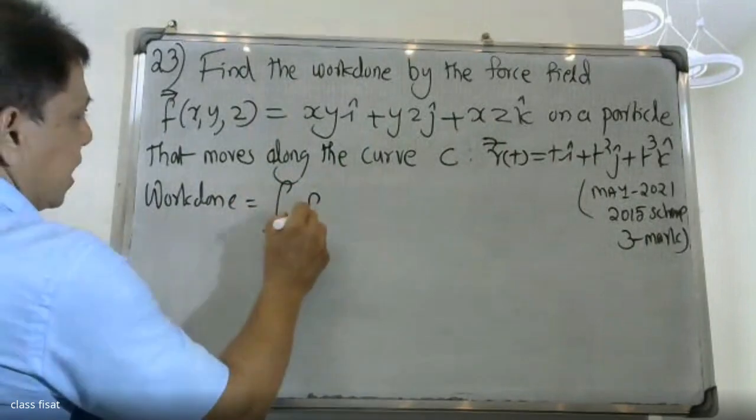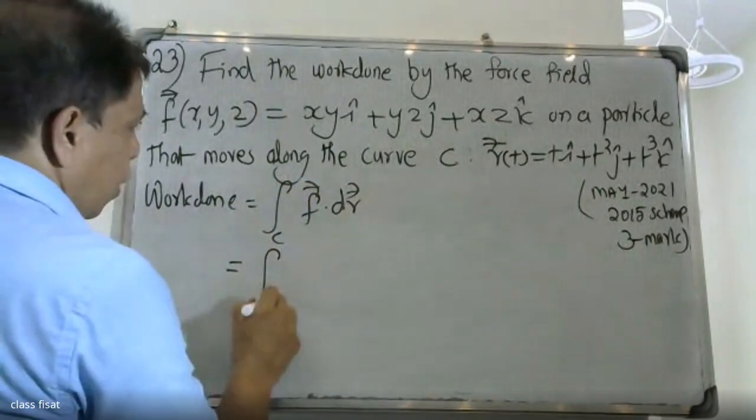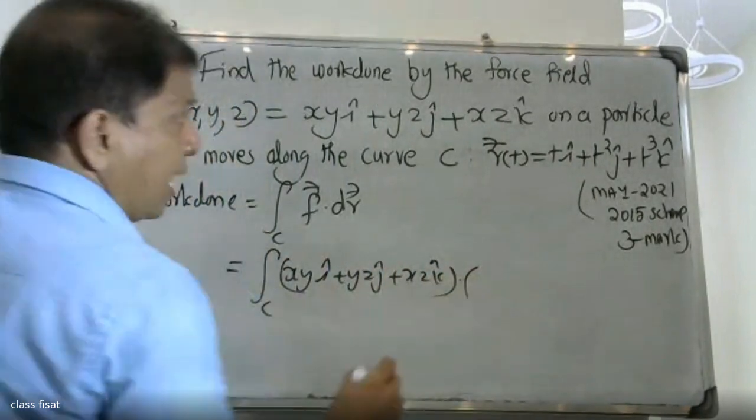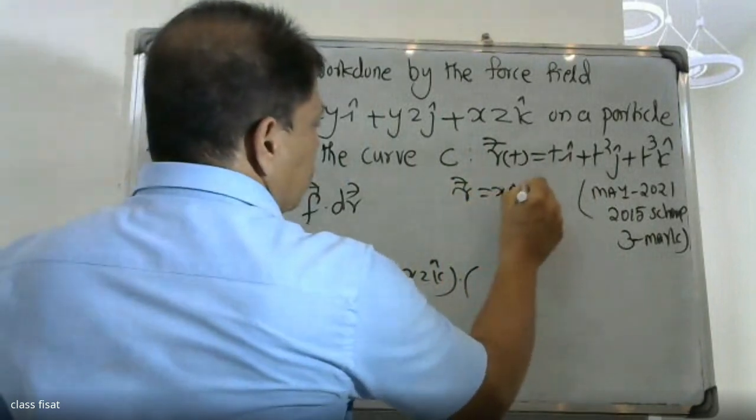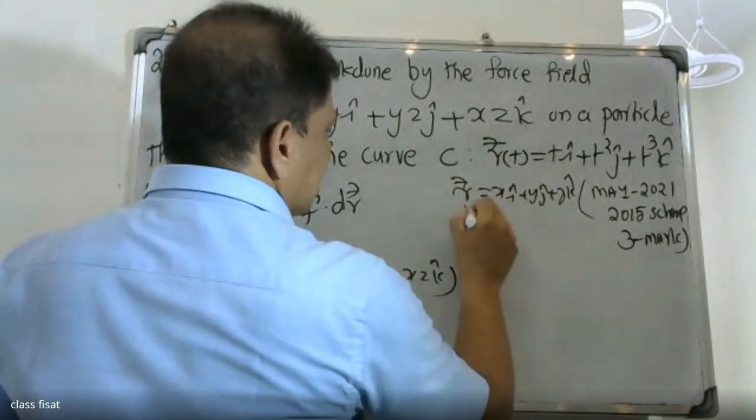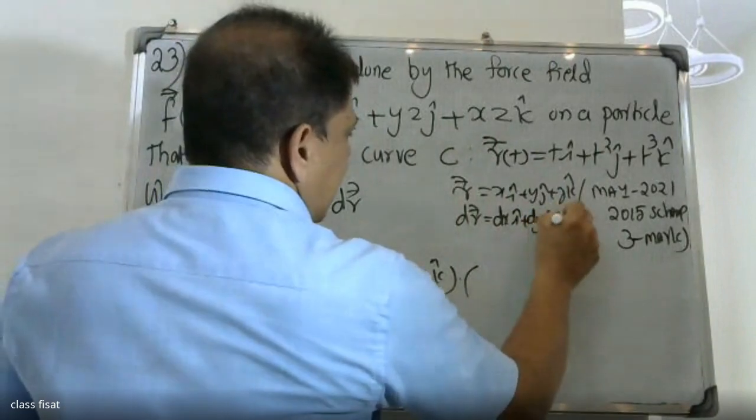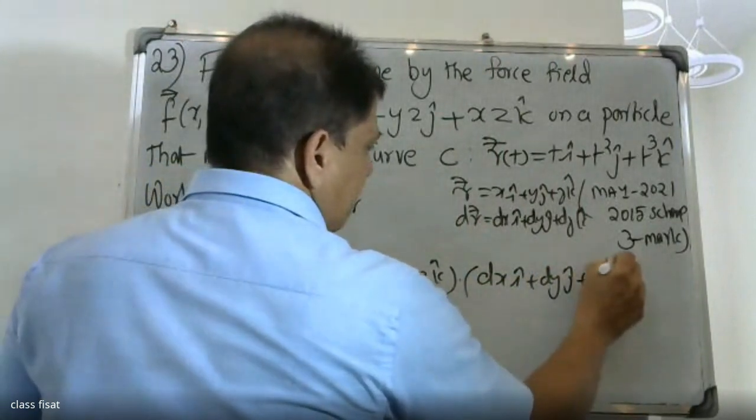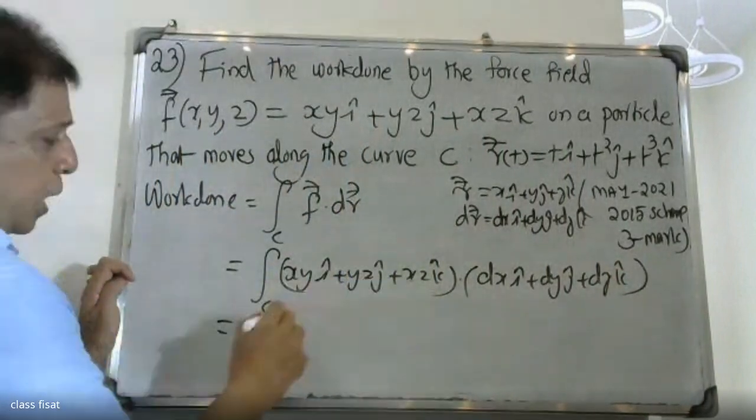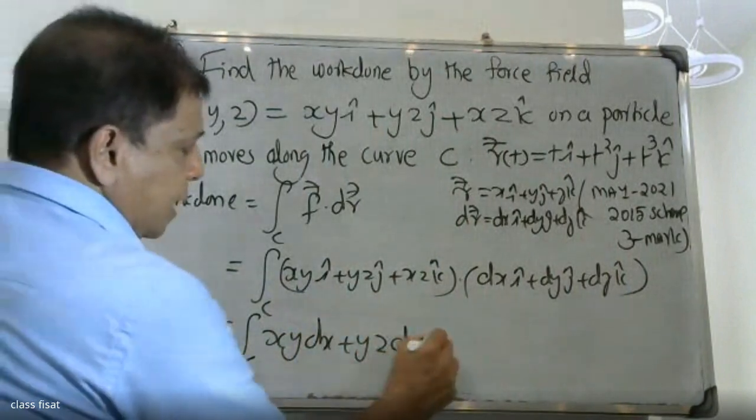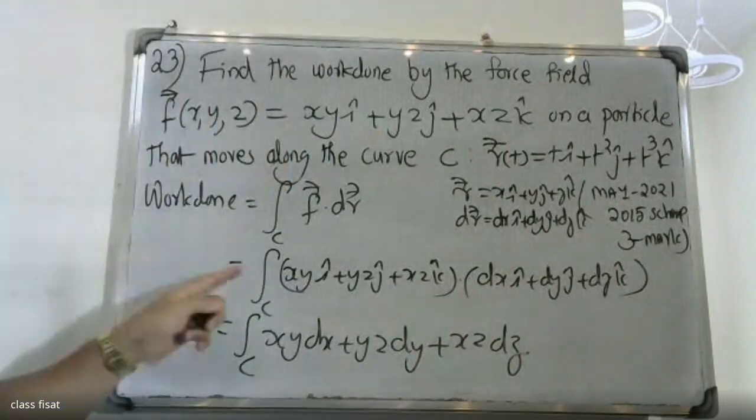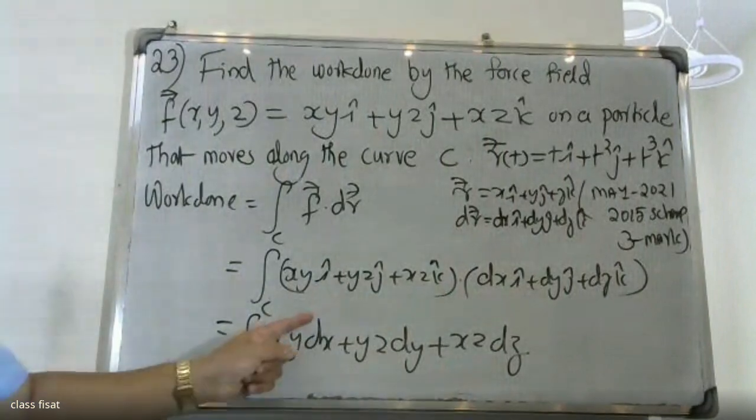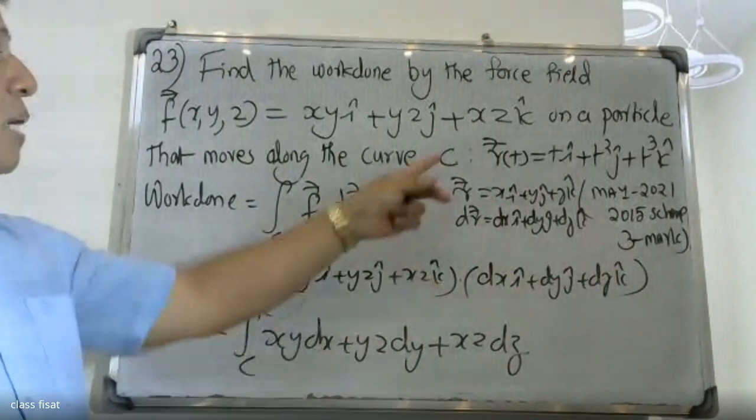The work formula is the integral over C of F dot dr. That is, F dot dr where F = xy i + yz j + xz k, and the vector r = x i + y j + z k, so dr = dx i + dy j + dz k. This gives us the integral over C of xy dx plus yz dy plus xz dz.